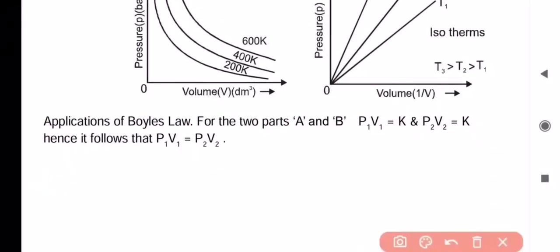Similarly for the applications of Boyle's law there are two parts A and B. P₁V₁ equals to K, here K is constant. Similarly P₂V₂ equals to K. We can say that P initial V initial is constant and P final V final is also constant. By equating both we can say P₁V₁ equals to P₂V₂.